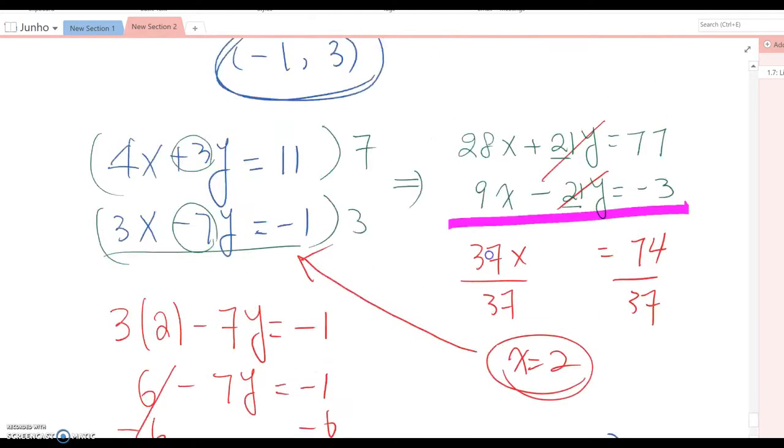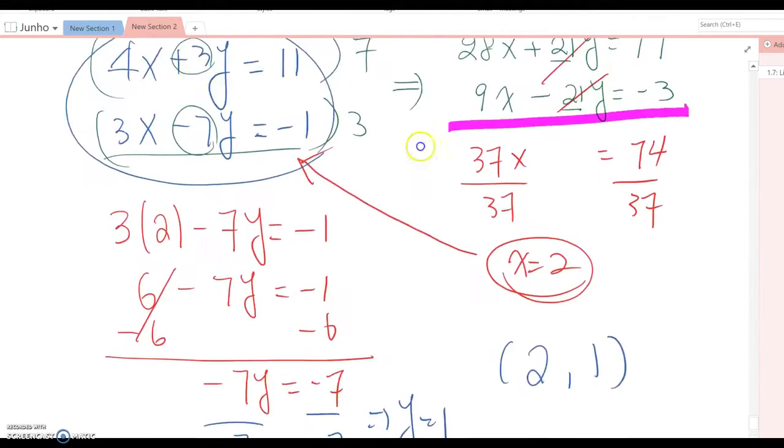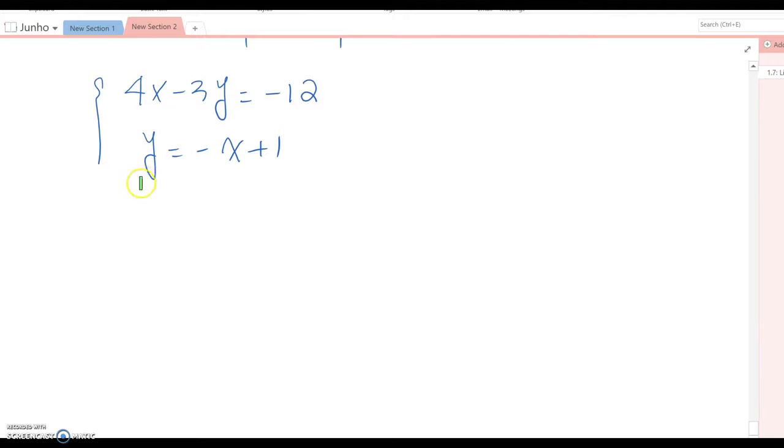Unlike the previous two questions, this equation system looks a little bit different. As you see, this function is already solved for y. Now we have to understand carefully, because this is a system of equations, which means we're looking for the intercept point between these two functions. This y must be the same as this y, so you can input this value into this y because y is defined as negative x plus 1.